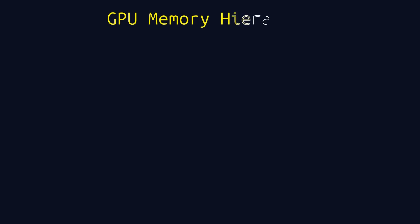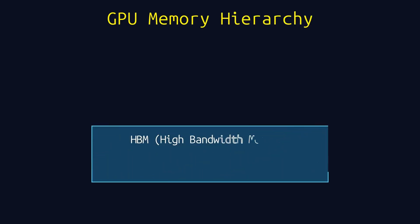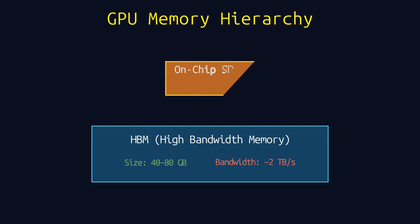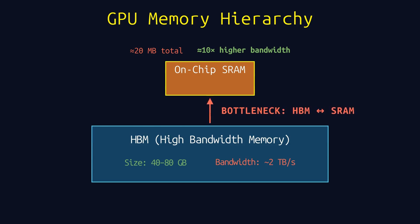To understand the solution, we need to understand GPU memory hierarchy. There are two key levels. High-bandwidth memory (HBM) is large — 80 gigabytes on an A100 — but slow. Then there's SRAM, the on-chip memory. It's tiny, only about 20 megabytes, but it's 100 times faster. The bottleneck is moving data between them. Every time we read from HBM into SRAM, we waste precious nanoseconds. Standard attention does this constantly, shuffling gigabytes back and forth.